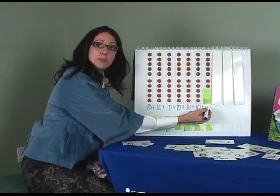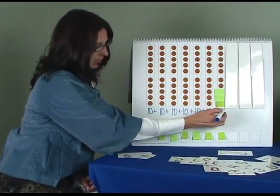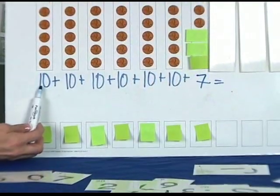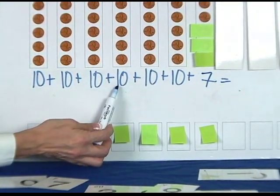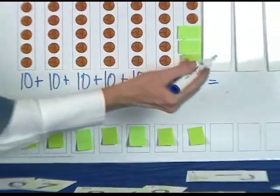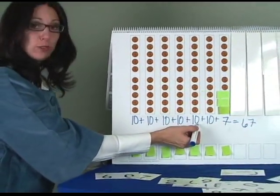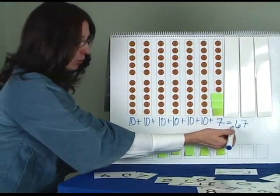Now I need to change the number of pennies located under this column to 7. The equation is: 10 plus 10 plus 10 plus 10 plus 10 plus 10 plus 10 plus 10 plus 7 is equal to 67. Let's double check: 10, 20, 30, 40, 50, 60 plus 7 more is equal to 67.